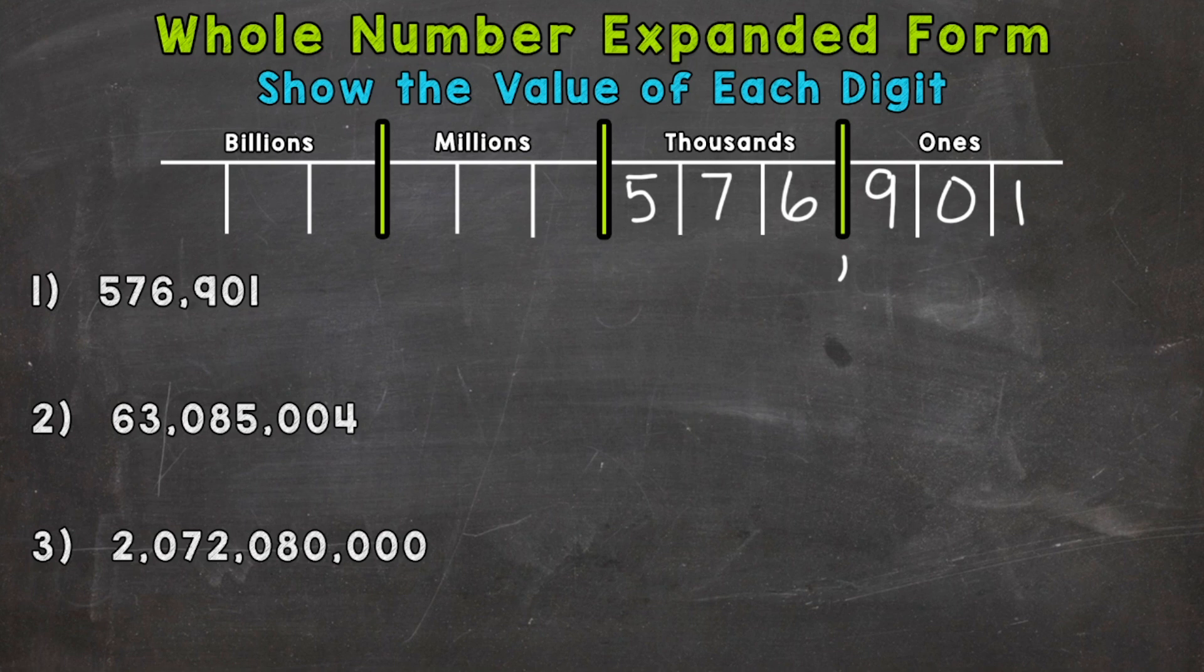Now before we put that into expanded form, I want to mention that the sections, the ones, thousands, millions, billions, those go on forever. We just go up to the billions in this video. So those sections separated by commas are called periods.